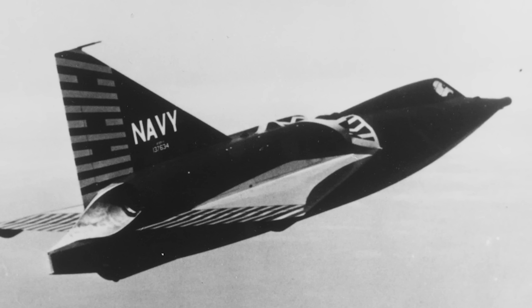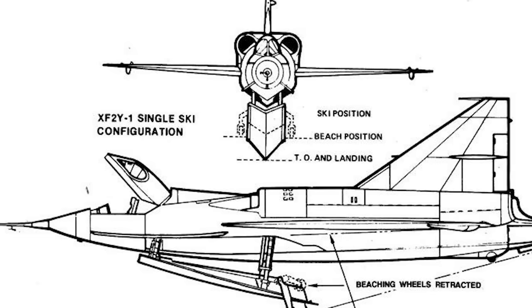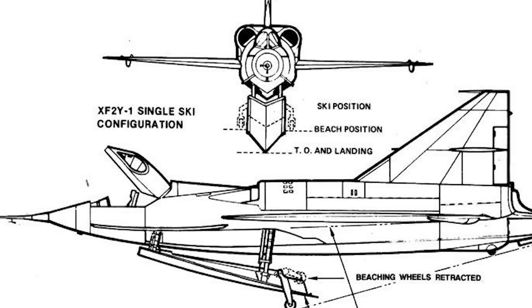During one of these tests, the vibrations were so violent that the nose probe was actually snapped clean off, and it had to be faired over for the Sea Dart's maiden flight, which took place on the 9th of April 1953. Owing to the horrendous water handling problems, the second prototype was cancelled, and the first prototype was repurposed as a testbed for ski and afterbody modifications.